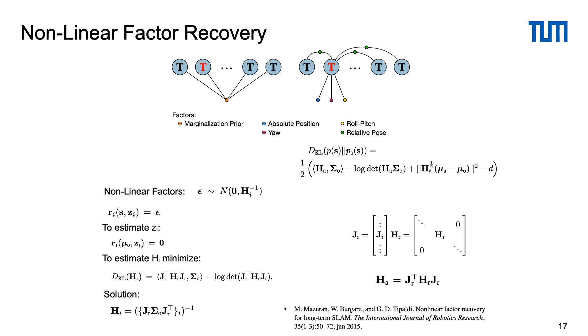This approach is presented in the paper by Mazuran et al., which describes a closed form solution for the case when stacked Jacobian matrix of the new measurements has a full rank. After recovering the distribution parameters we drop absolute position and yaw factors and reuse relative poses and roll pitch factors in the global mapping.